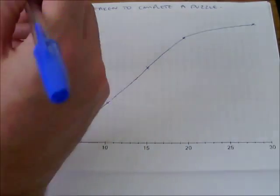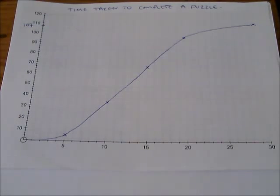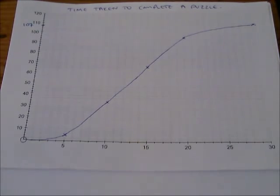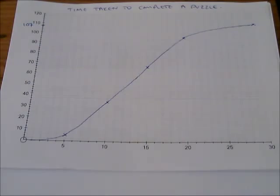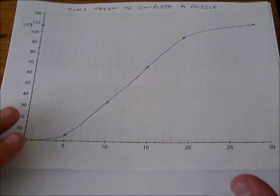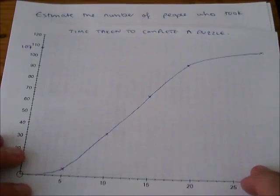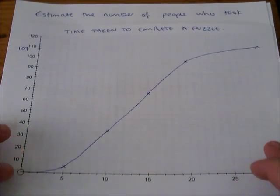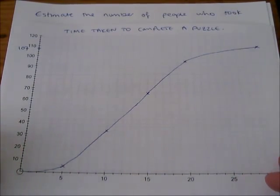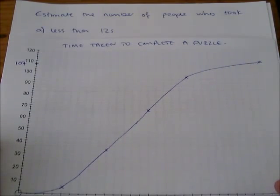So this number, 107, tells us how many people were involved in the survey or the experiment. Now the first question we're asked is to estimate the number of people who took less than 12 seconds.